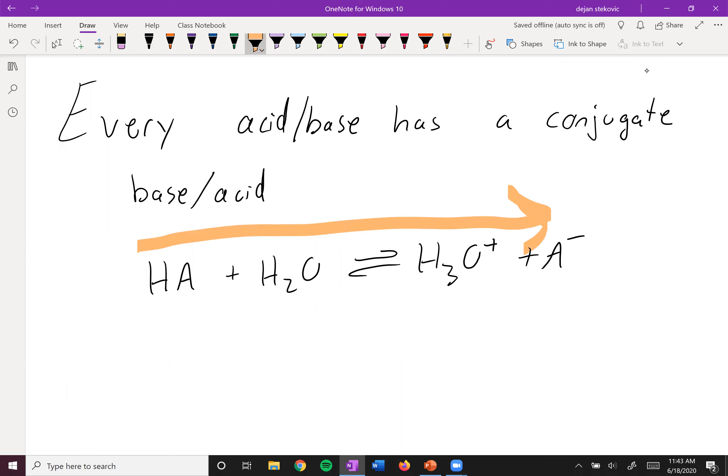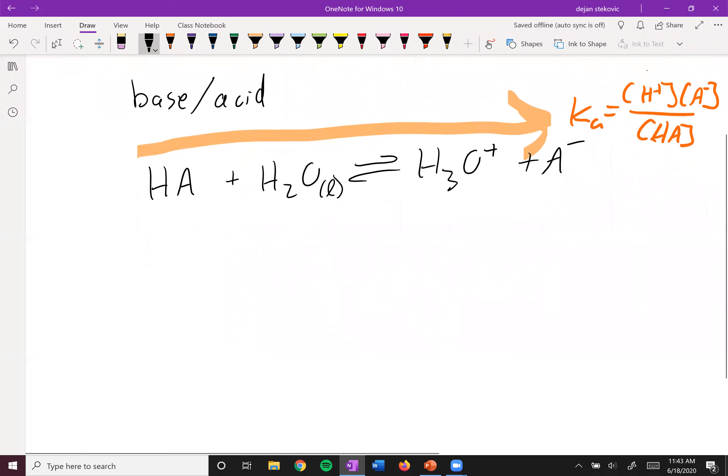We're talking about going in this direction, so we can talk about KA here, where it's going to be equal to concentration of H plus times A minus all over HA. We ignore the water because it is a liquid.